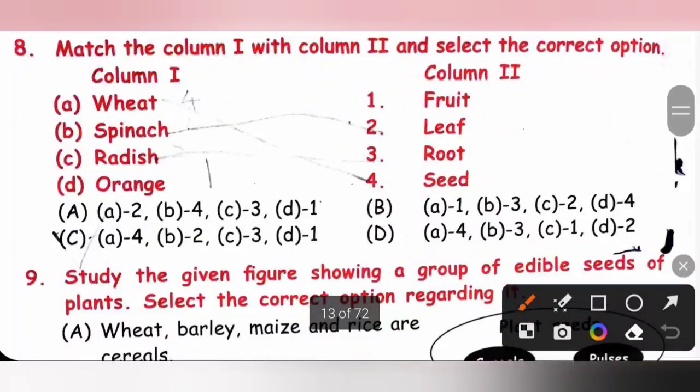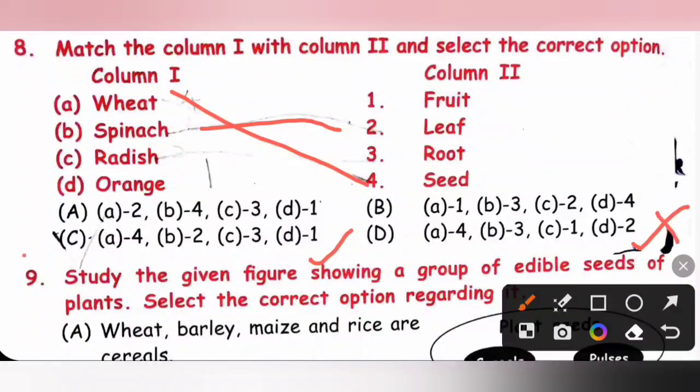Eighth one, match the column 1 with column 2 and select the correct option. Wheat is obtained from seed, so A4. Either option C or D will be correct. Spinach is leaf, so B2. So option C is the correct answer. Radish is a root and orange is a fruit. So A4, B2, C3 and D1. Option C is the correct answer.